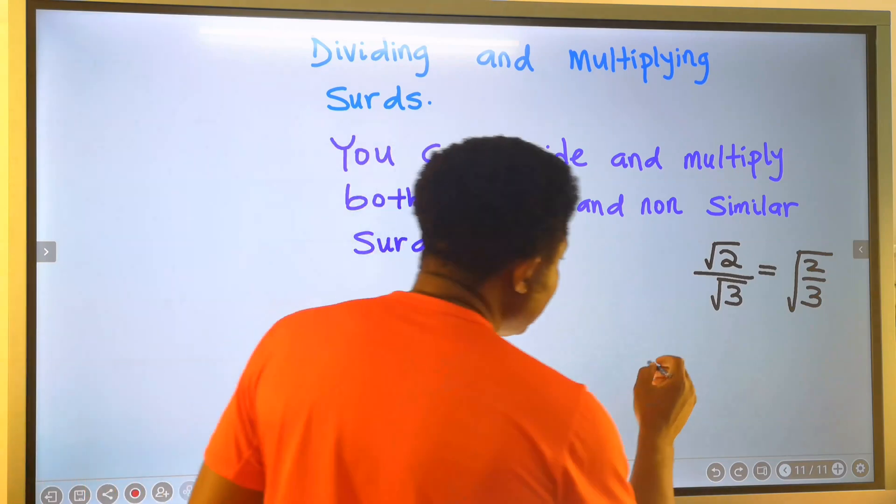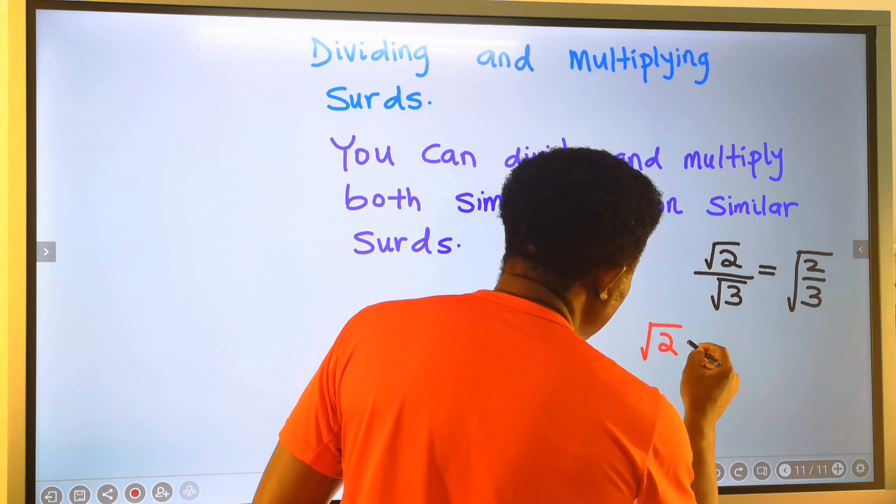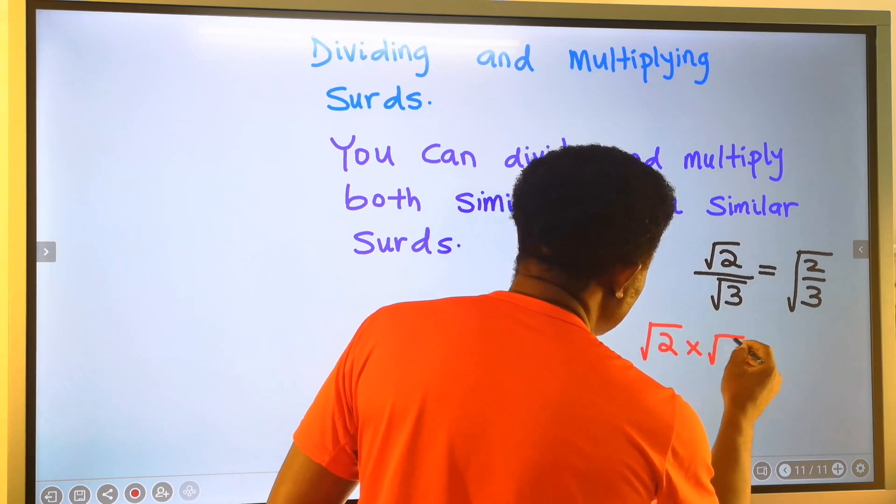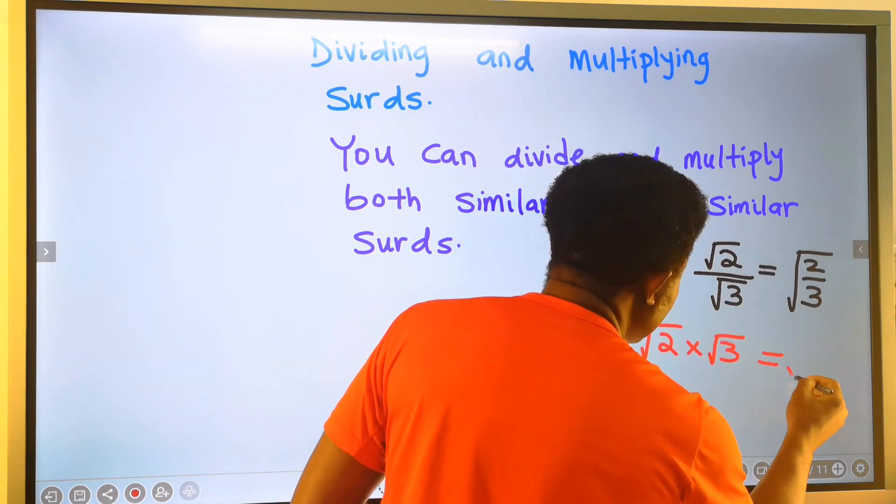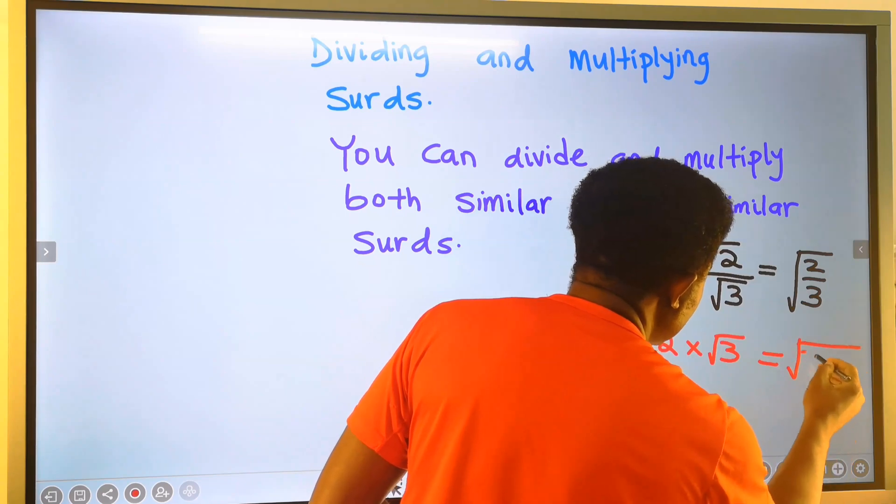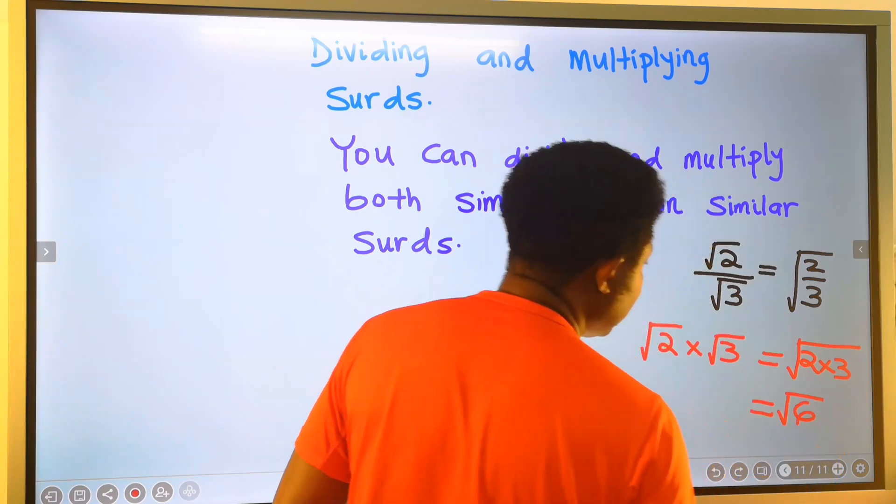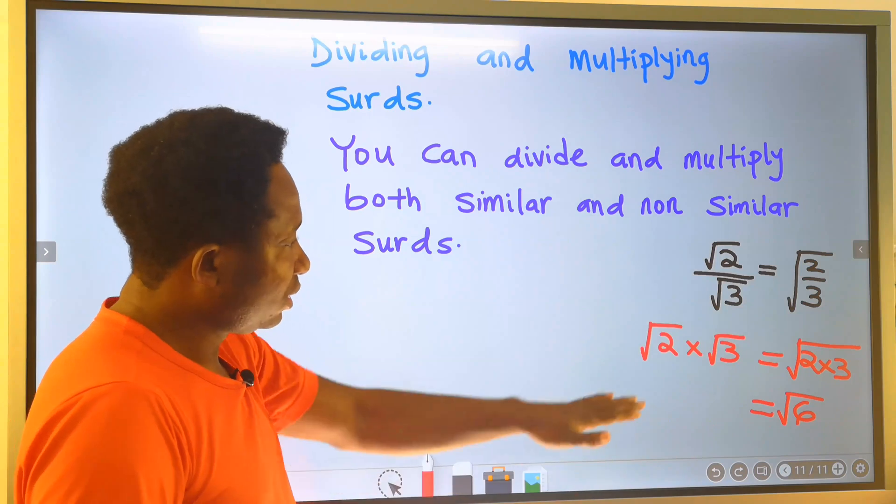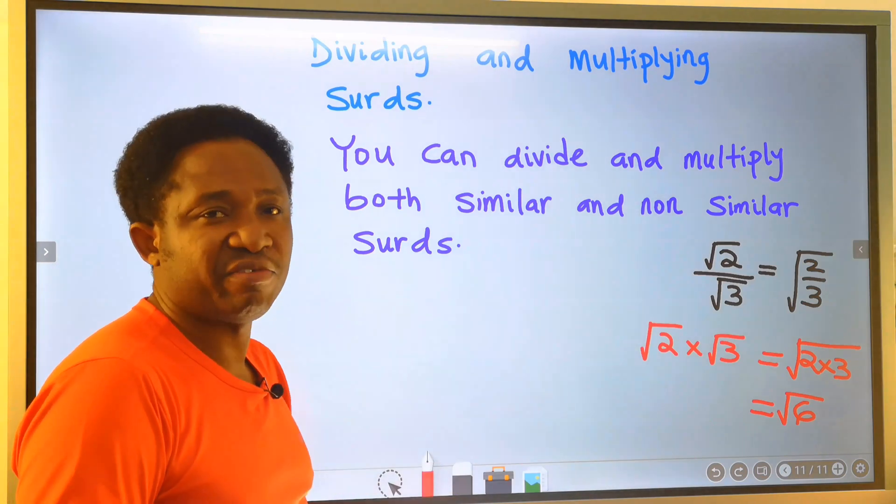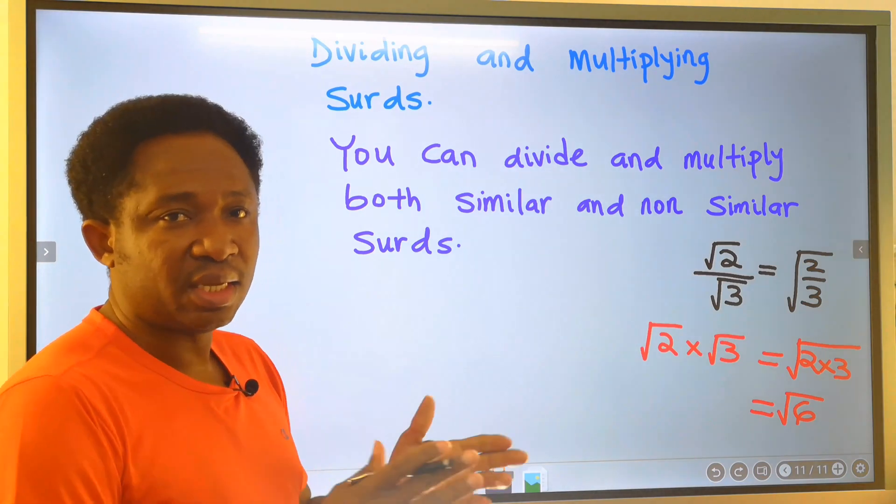Likewise, the square root of 2 multiply the square root of 3. We can write it as the square root of 2 times 3. And this is the square root of 6. In surds, this is perfectly fine and is allowed.